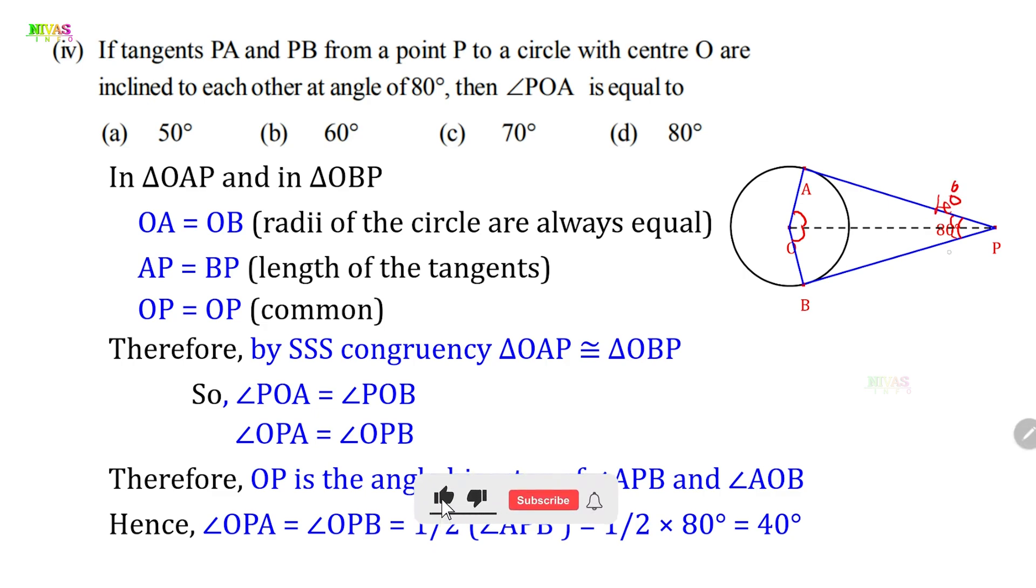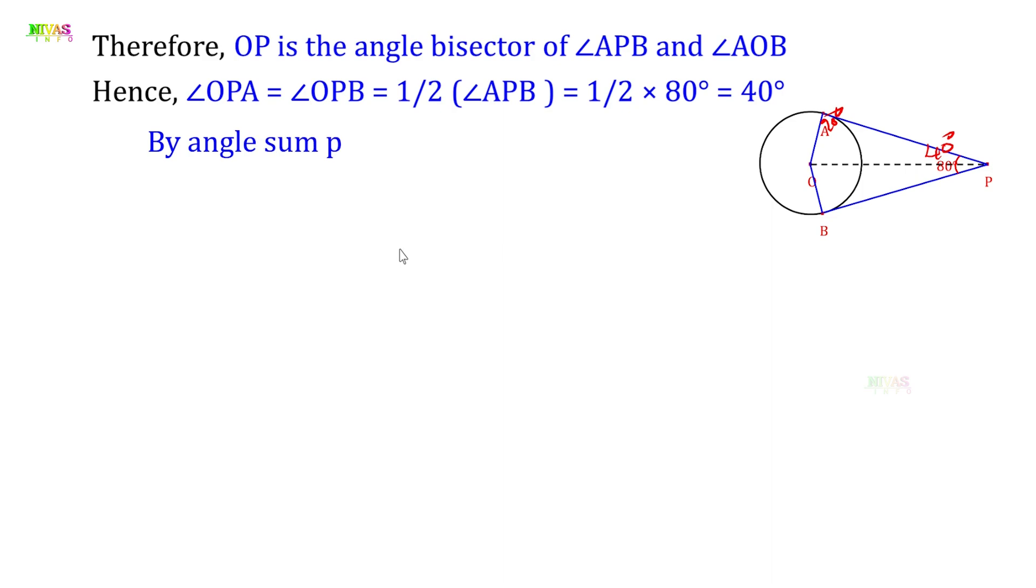Now, angle OAP is equal to 90 degrees according to theorem 9.1. Why? Because radius and tangent are perpendicular, which equals 90 degrees. We will find out angle POA. This is POA. We have one triangle with these two angles, so we can find the third angle using angle sum property.